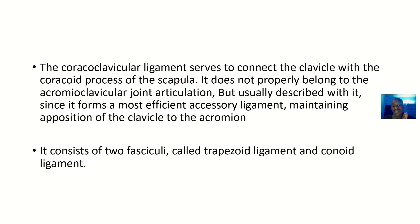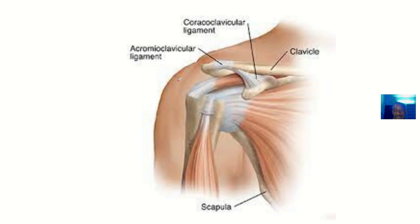It does not properly belong to the acromioclavicular joint articulation, but is usually described with it, since it forms the most efficient accessory ligament maintaining the position of the clavicle to the acromion. It consists of two fascicles: the trapezoid ligament and the conoid ligament.